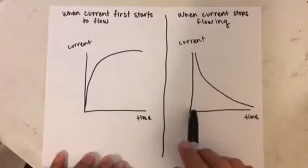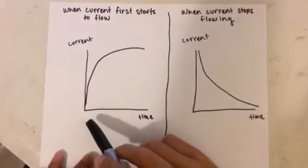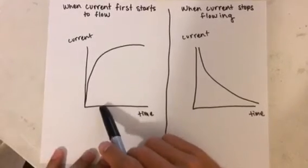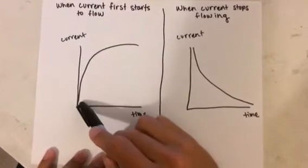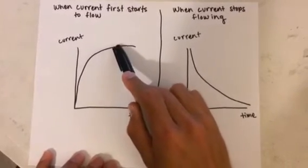By looking at these two graphs, we can notice that when current first starts to flow through a coil, a magnetic field starts to expand and then slowly stabilizes, leaving energy that is being stored in the magnetic field.